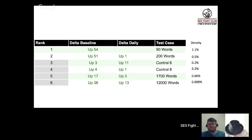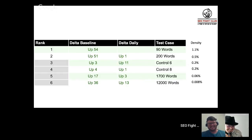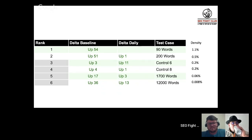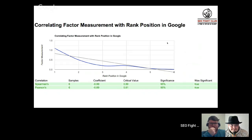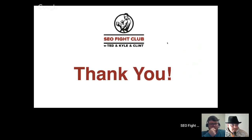We have a stats guy named Lee who reviews a lot of our data — hats off to Lee, he's a smart cat. I'm willing to bet he's at home screaming at his computer right now. When I looked at the density I got the right correlation for ranking — a very strong correlation. In a nutshell, that's testing.